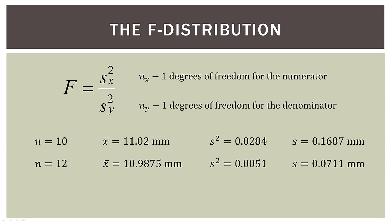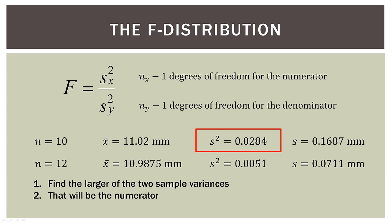So here is our data from before. And the first thing we do is find the larger of the two sample variances. So in this case, it's the sample variance from our first sample. So 0.0284 is larger than 0.0051. And then that will be our numerator in the F ratio.